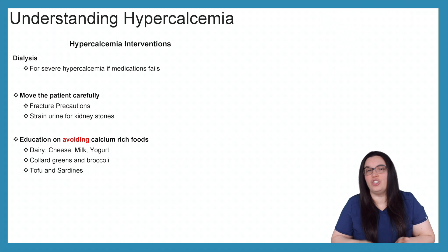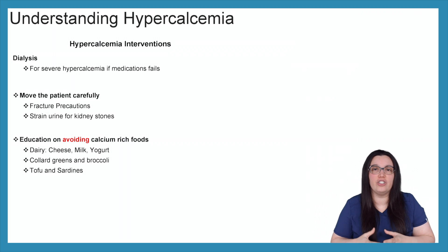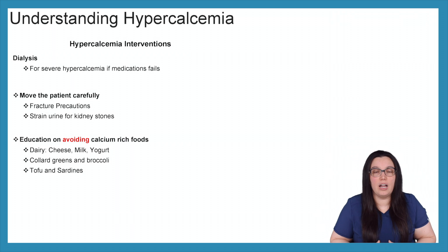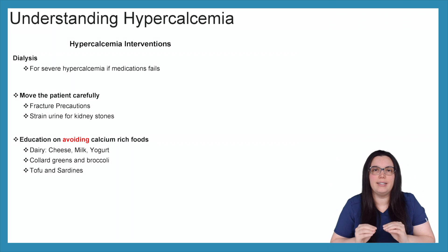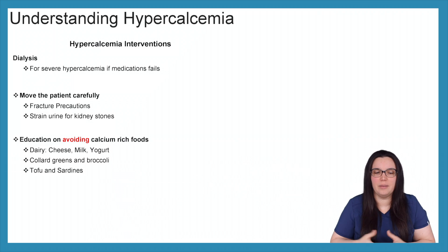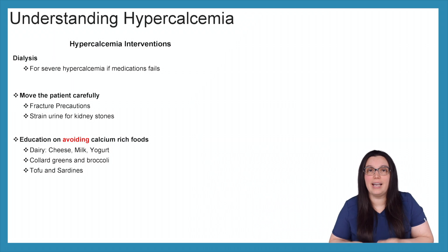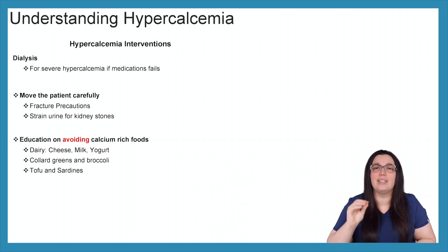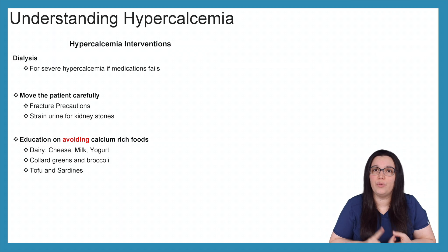A few of our last interventions: dialysis for severe hypercalcemia if the medications we provide ultimately fail. We really want to move these patients very carefully because they are going to be at an increased risk of fractures — too much calcium is not good, too little calcium is not good, so the bones have to have a very finite balance of calcium to maintain their integrity. We also want to strain their urine for kidney stones, because they're going to be in extreme pain passing those kidney stones from high serum calcium levels. And of course, we want to educate our patients on avoiding calcium-rich foods such as dairy — no cheese, no milk, no yogurt — as well as collard greens, broccoli, tofu, and sardines, because they are very high in calcium and will ultimately make the hypercalcemia worse.